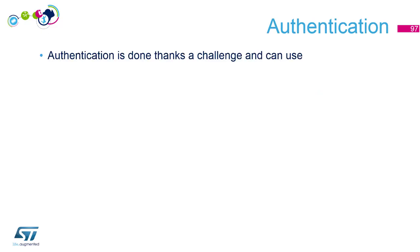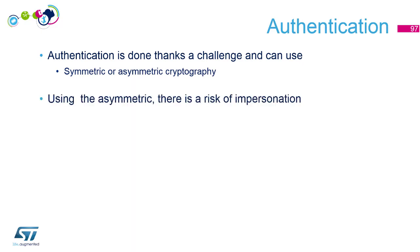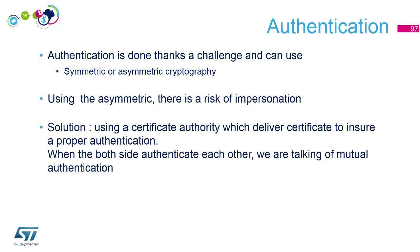To summarize: authentication is done using a challenge, and you can use symmetric or asymmetric cryptography. With asymmetric cryptography there is a risk of impersonation, which is mitigated by using a certificate mechanism and a certificate authority that delivers certificates. If both sides authenticate each other, we call this mutual authentication — a term commonly used in practice.